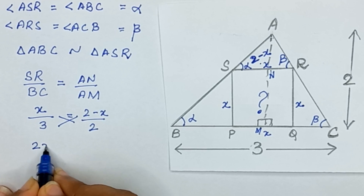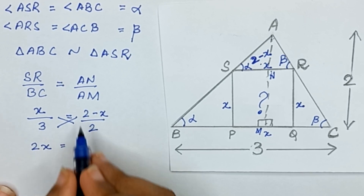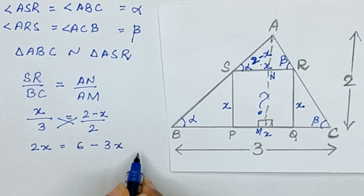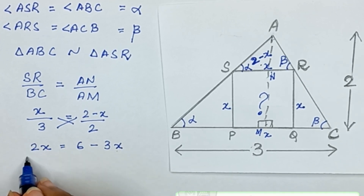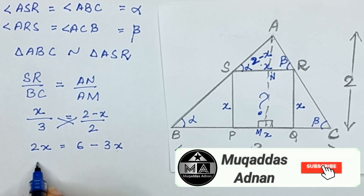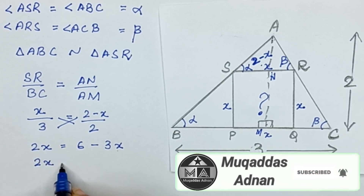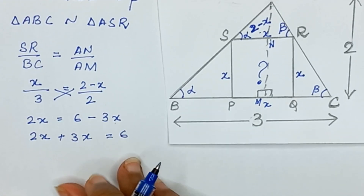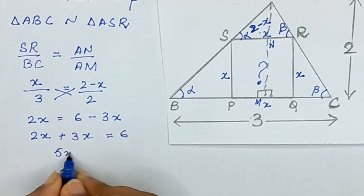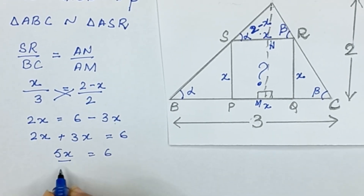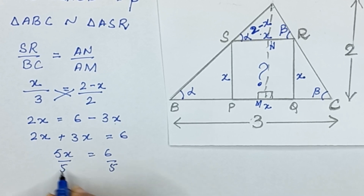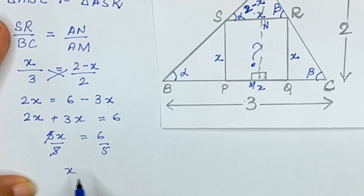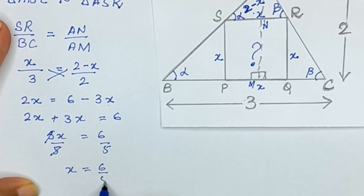Cross multiplying gives 2x equals 3 times (2 minus x), which is 6 minus 3x. Bringing 3x to the left: 2x plus 3x equals 6, so 5x equals 6. Dividing both sides by 5 gives x equals 6 divided by 5.